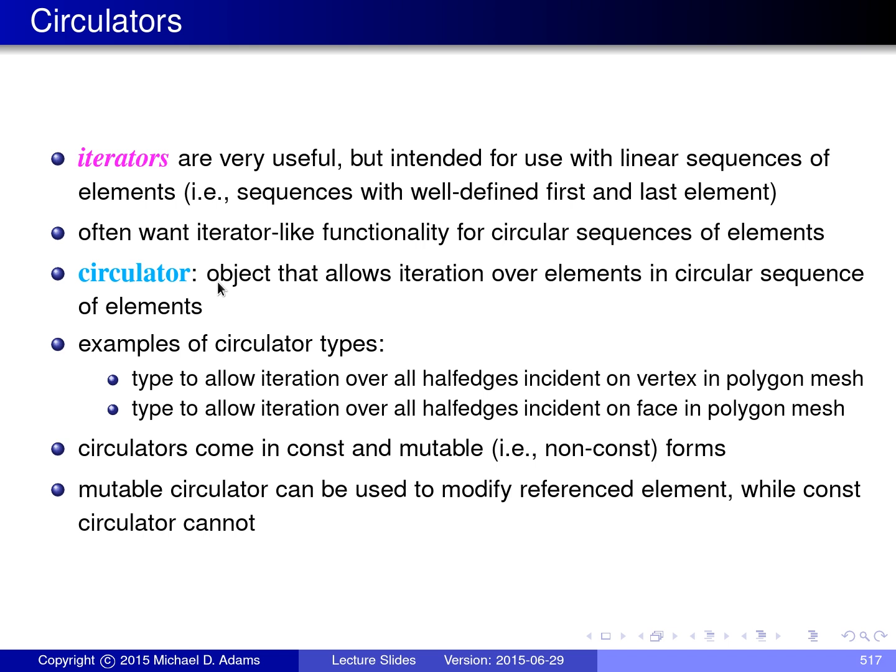A circulator is basically the equivalent to an iterator, but it's designed to be used with circular sequences. So, it fits much better with circular sequences than an iterator would. Some examples of circulator types in CGAL is a type to allow iteration over all of the half edges that are incident on a particular vertex in a polygon mesh, or the type to allow iteration over all half edges that are incident on a particular face in a polygon mesh. So, essentially, you can iterate around all of the edges, for example, that are incident on a vertex, or all of the faces that are incident on a vertex.